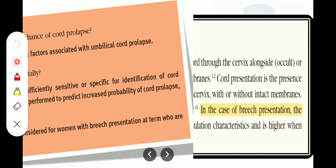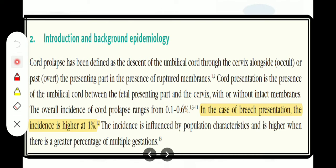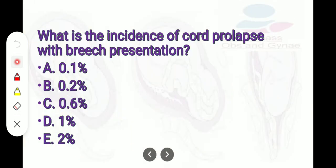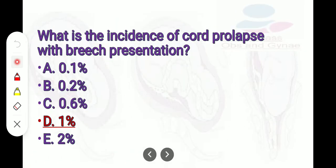In the introduction and background epidemiology, one important thing is that in case of breech presentation, the incidence is higher — that is 1%. About this we have an exam question: what is the incidence of cord prolapse with breech presentation? The answer is 1%.